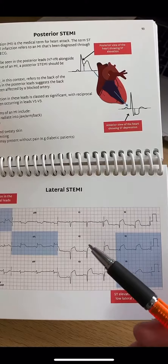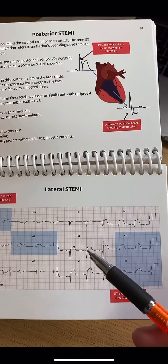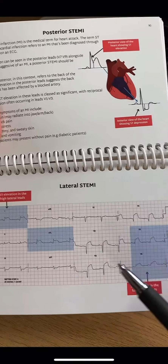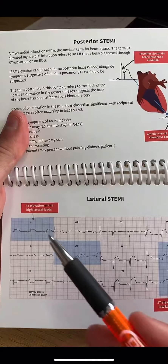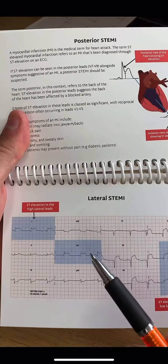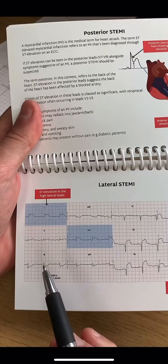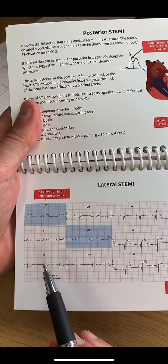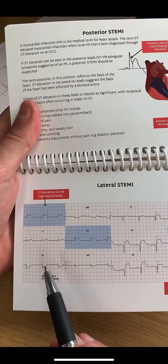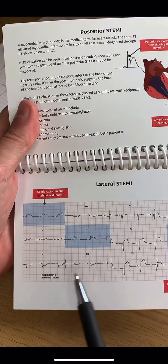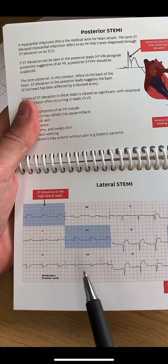Let's go through some examples. Here we can see ST elevation in V2, V3, and V4, as well as the lateral leads, and we can see reciprocal ST depression in lead 3 and lead AVF. These are reciprocal changes.